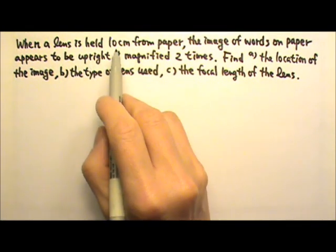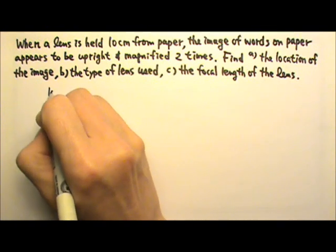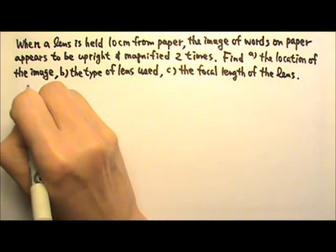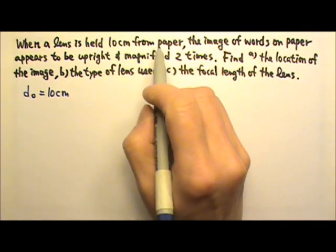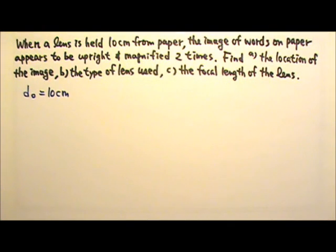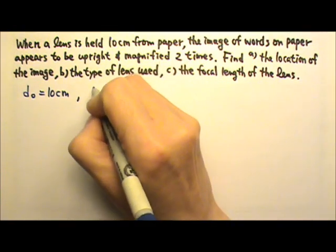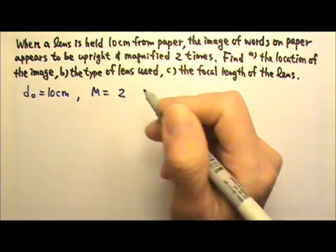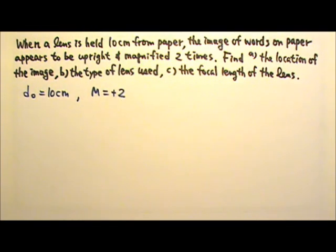The lens is held 10 cm from the paper. That means 10 cm is the object distance, DO, because the words on the paper are the object. The magnification is two times, so M equals 2, and because it is an upright image, that means the M is positive 2.